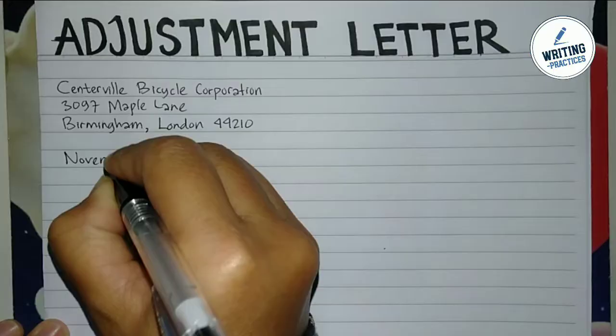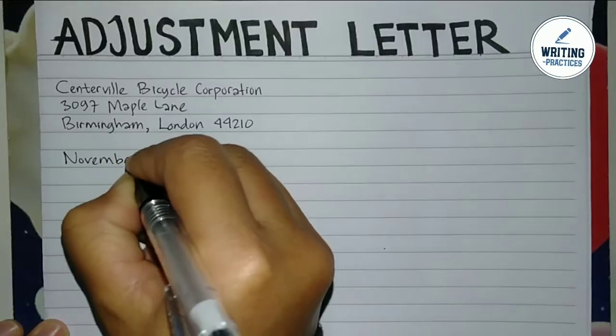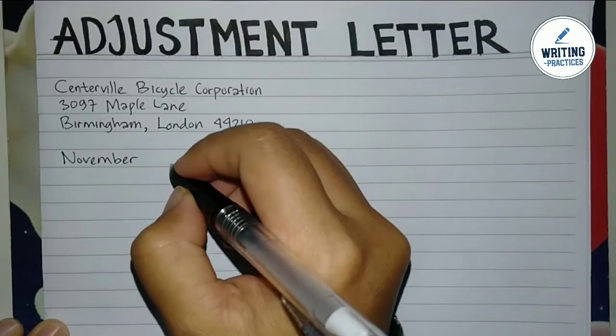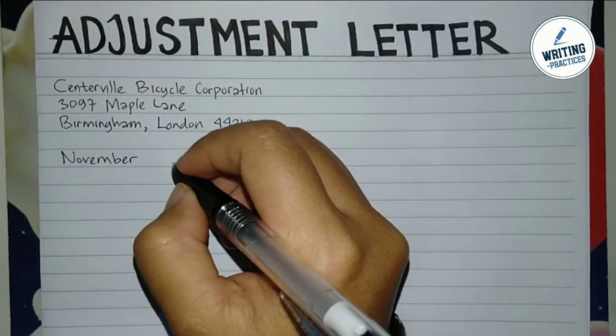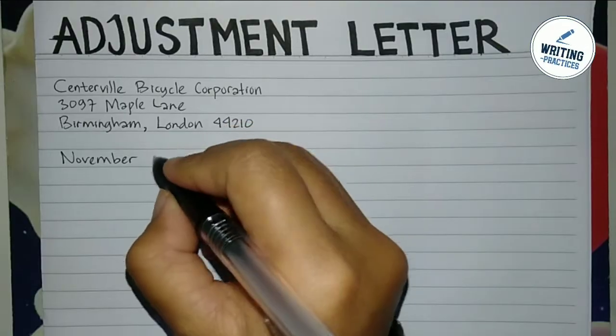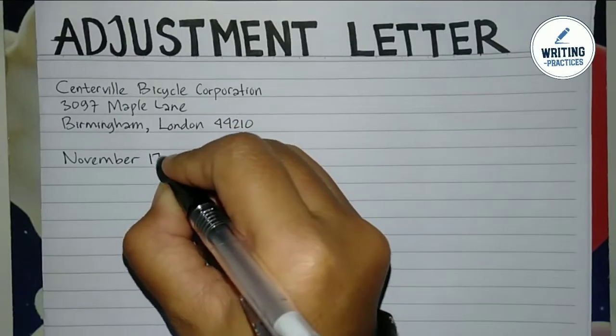When you write the address, don't forget to mention the number, street name, city, state, and zip code. Now you can write the date of the letter. Use the format of month, date, and year. In this example, it is November 17, 2023.